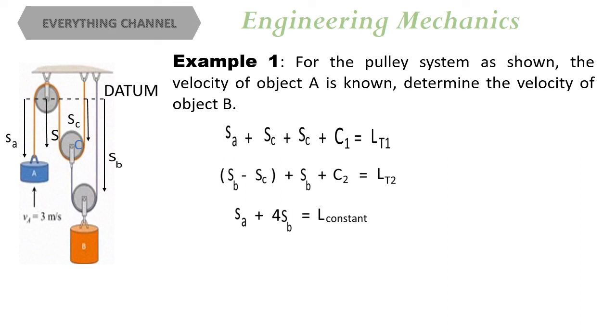Step 5. We can differentiate this equation and we will get D of SA upon DT plus 4 times D of SB upon DT equals 0.